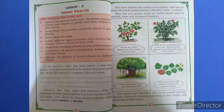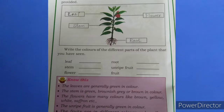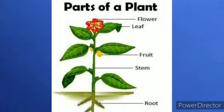Can you see the picture here? This is the picture of a plant. Read the parts of the plants. Plants have roots, stem, leaf, fruit, flowers. These all are parts of the plants.